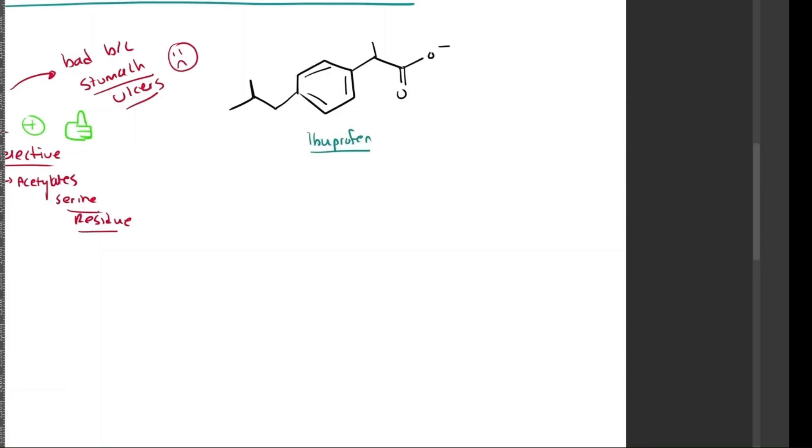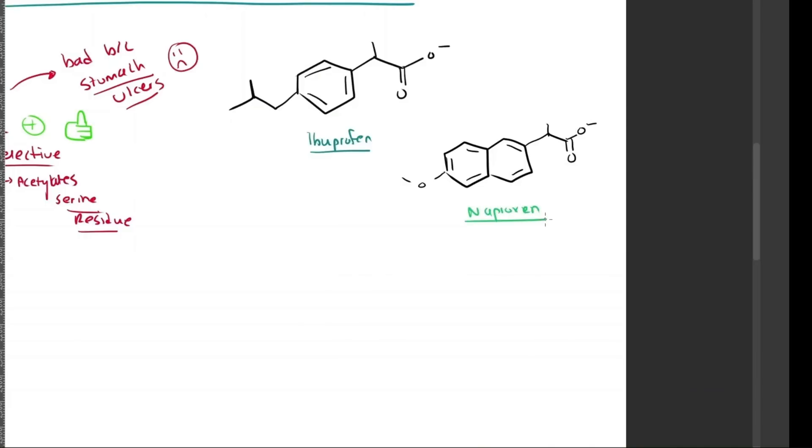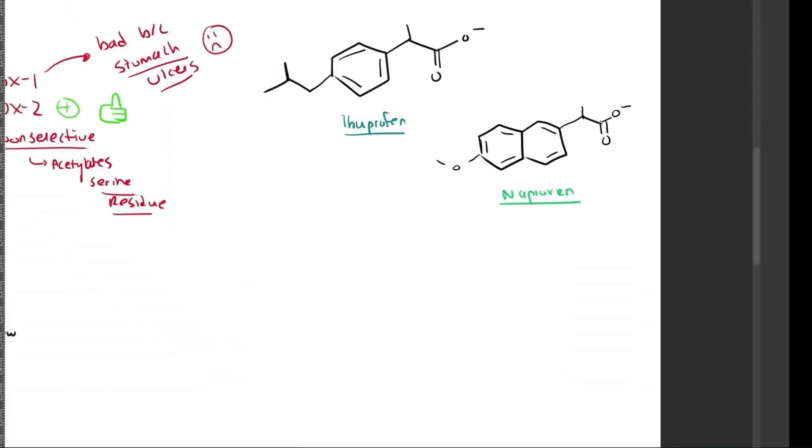Now, I am going to be drawing here flurbiprofen and naproxen. Naproxen is also called Aleve. Naproxen is basically similar to ibuprofen in its mechanism of action, but it has a longer half-life, essentially meaning it lasts longer in the blood. Its uses are that it's ideal for chronic inflammatory conditions like arthritis, and essentially has the same risks as ibuprofen. You don't want to overdose or overuse it, as it could cause stomach ulcers and kidney damage long-term.